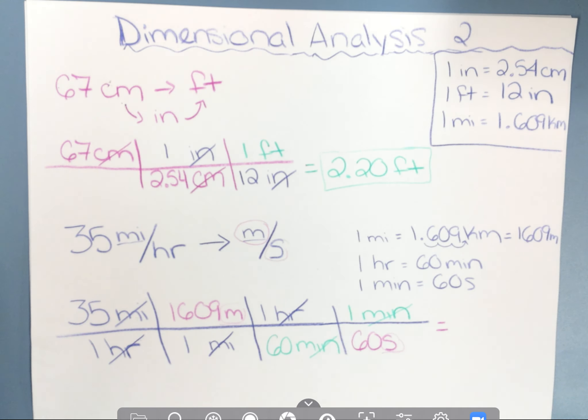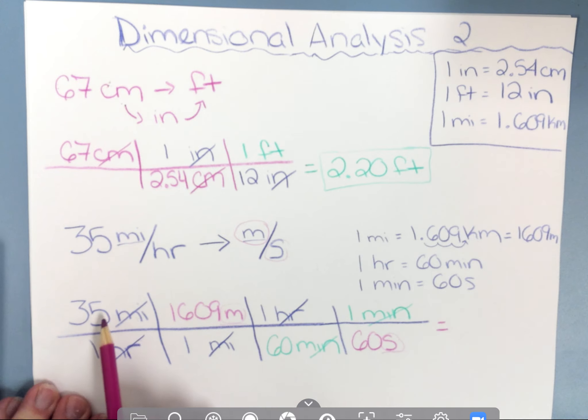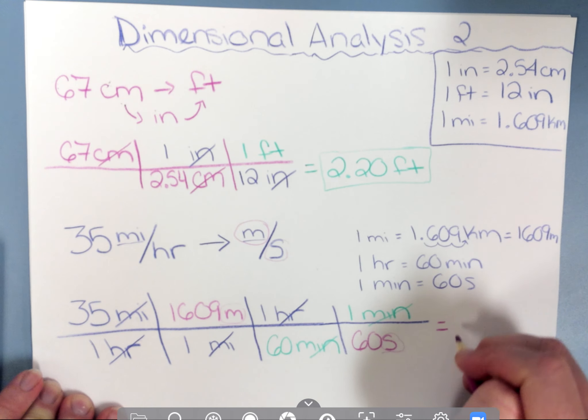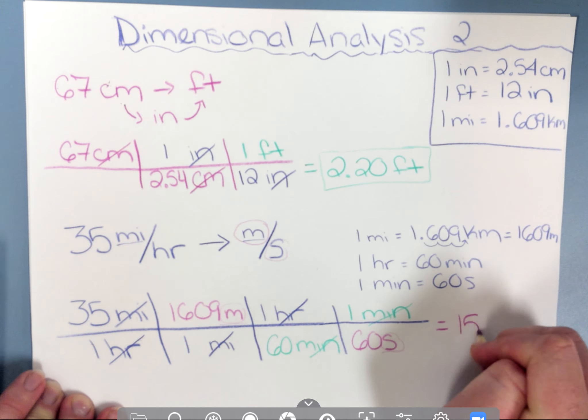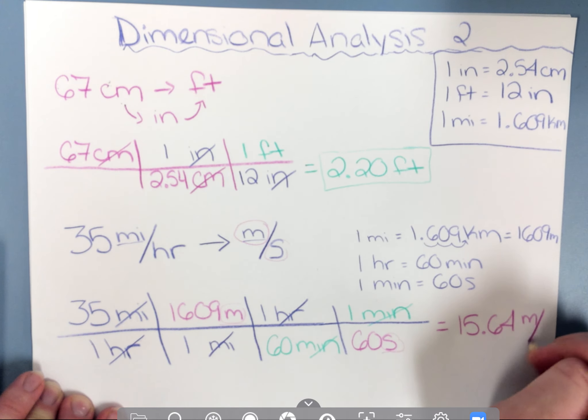So 35 divided by 1 times 1,609 divided by 1 times 1 divided by 60 times 1 divided by 60. And you find out that 15 miles, or I'm sorry, 35 miles per hour is equal to 15.64 meters per second.